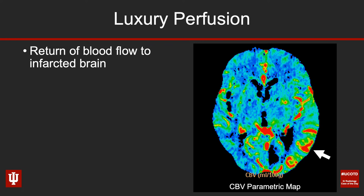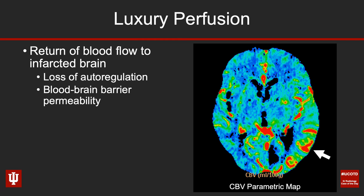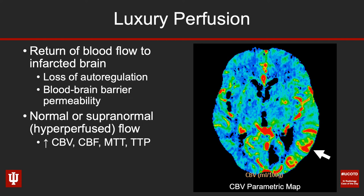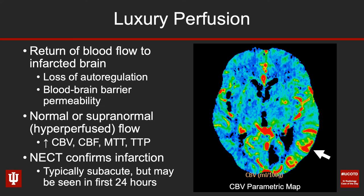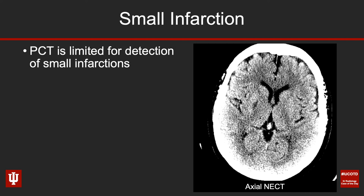Another topic to know about is luxury perfusion — when there is a return of blood flow to infarcted brain due to either a loss of autoregulation or a permeable blood-brain barrier. This gives either normal or supernormal (hyperperfused) flow, so across the board all perfusion parameters will be up. It's important to look at the non-contrast CT because that will confirm the infarction. This is typically seen in the subacute phase, but it can creep into the first 24 hours, so be aware of it in your stroke evaluation.